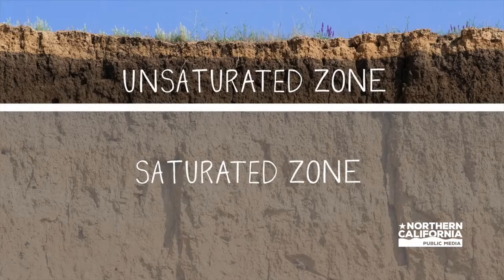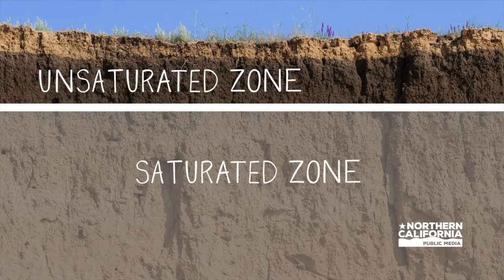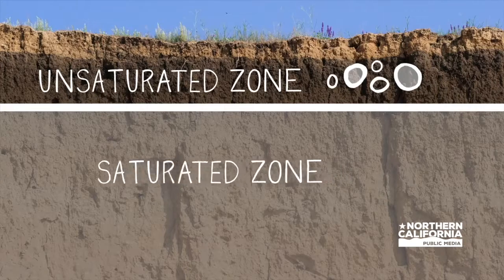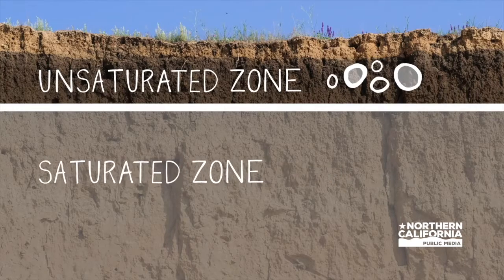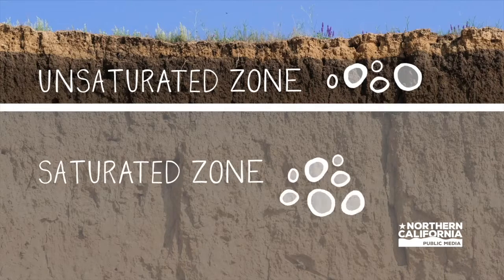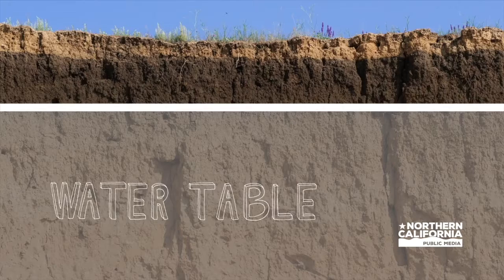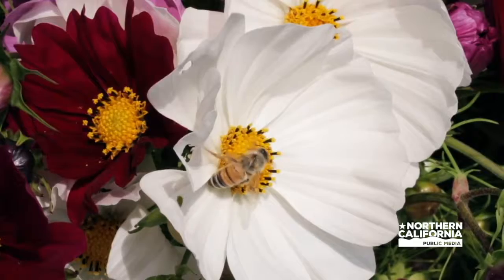The unsaturated zone is located directly beneath the land surface and the pore spaces hold both air and water. In the saturated zone, all the open spaces are filled with water. The water table is the very top of the saturated zone and the bottom of the unsaturated zone.